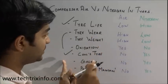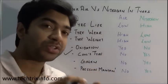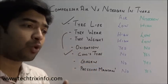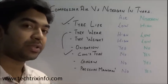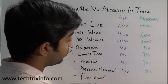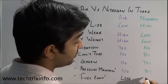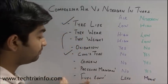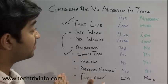Regarding tire weight, compressed air contains about 30% moisture or water content, which makes the tire heavier and puts more load on the engine. More engine load means increased fuel consumption — so fuel economy will be less with compressed air. With nitrogen-filled tires, the weight of the tire is less, so the load on the engine is less and fuel economy improves.